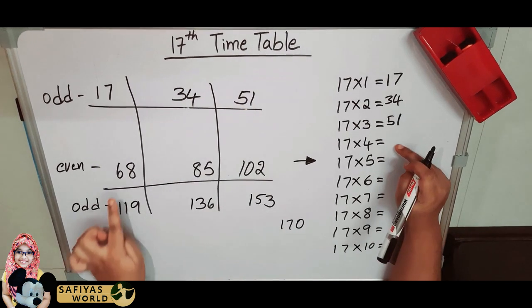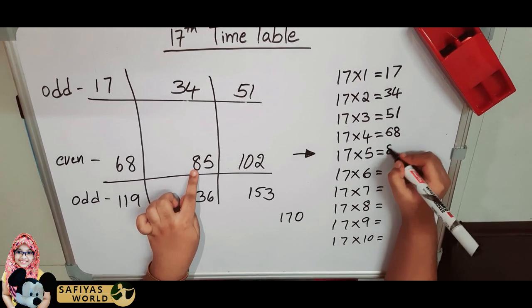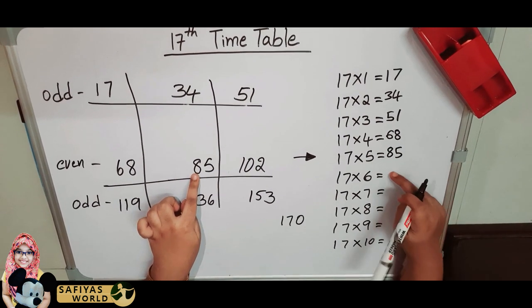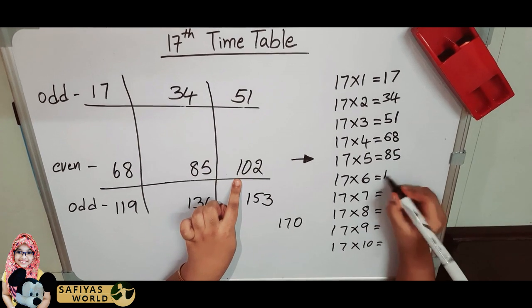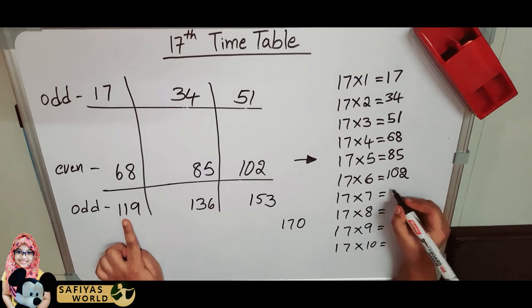17 fours are 68, 17 fives are 85, 17 sixes are 102... 17 sevens are 119.